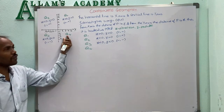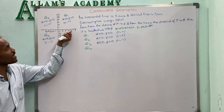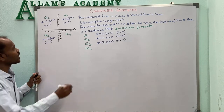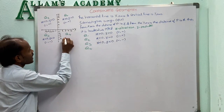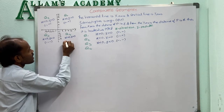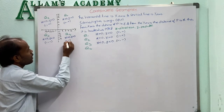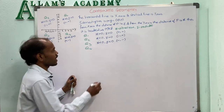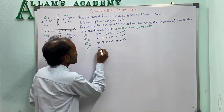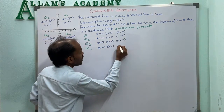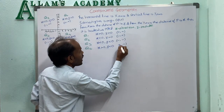In the fourth quadrant Q4, the x-coordinates are positive and the y-coordinates are negative. So x > 0 and y < 0, denoted as (+, −).